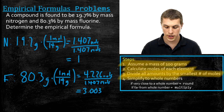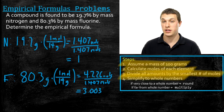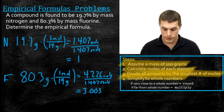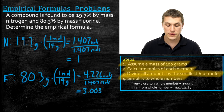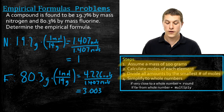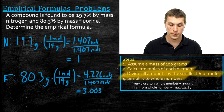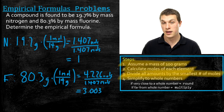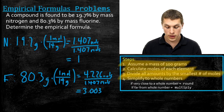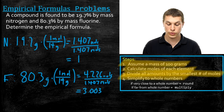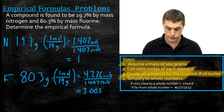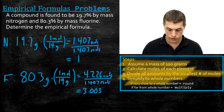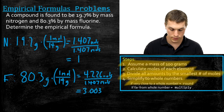Step four is to simplify those to whole numbers. There are two cases: if a number is very close to a whole number, we just round. If it's far from a whole number, we must multiply by some whole number — I'll show that in the next example. In this case, 3.003 is very close to a whole number, so we round it to 3.